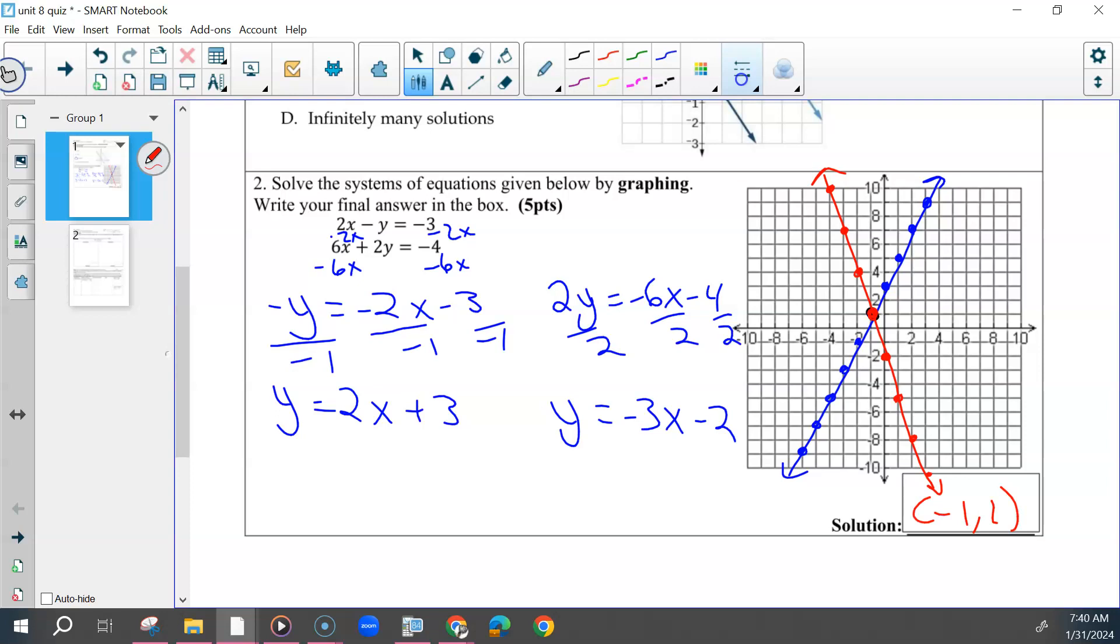Now, you could have used the algebraic method to check yourself, substitution or elimination. You also could have taken your solution and put it back into your two given equations to see if both of them were true. But you shouldn't have mainly been doing algebraic here. So the five points were: did you get the two equations correct, did you graph them correctly, and did you get the solution correct? Questions on anything solving systems by graphing?